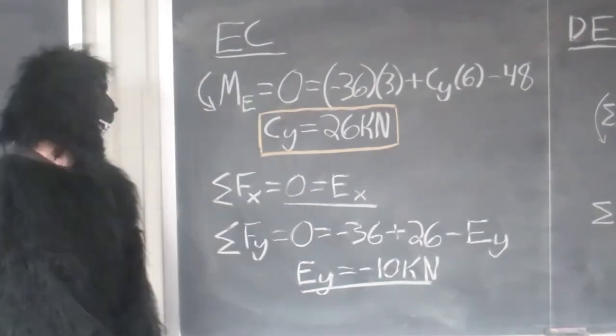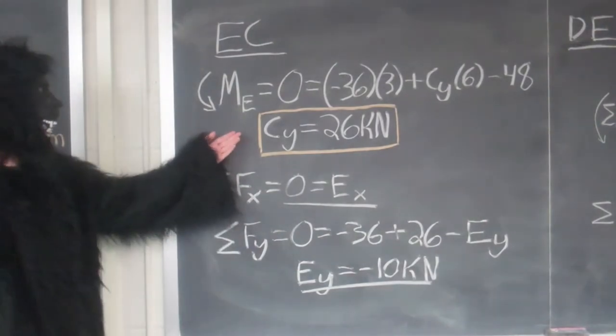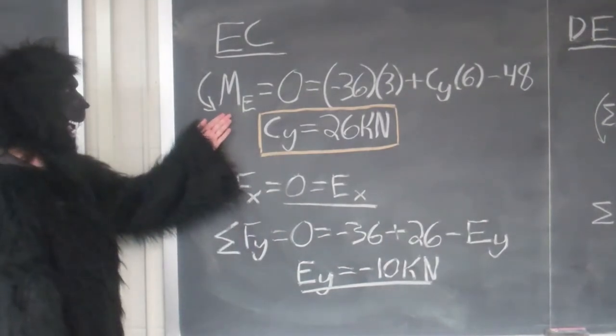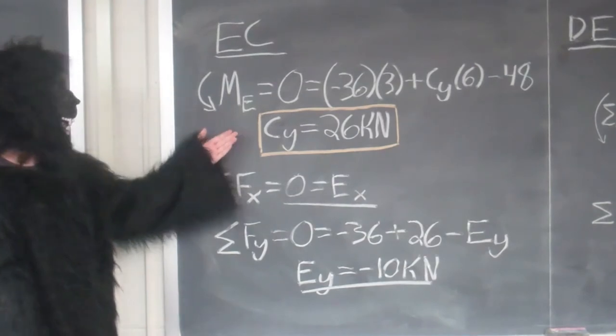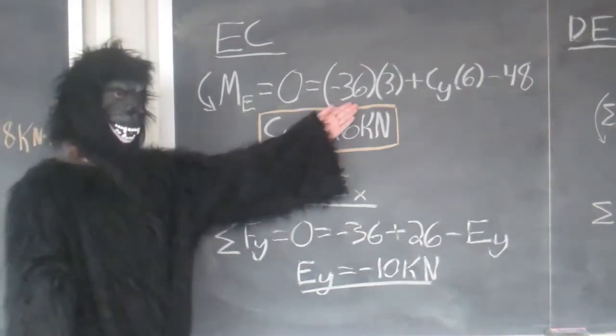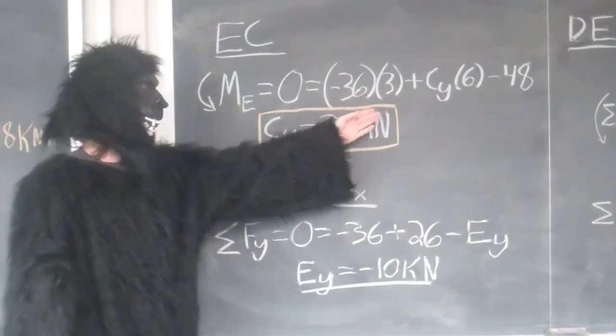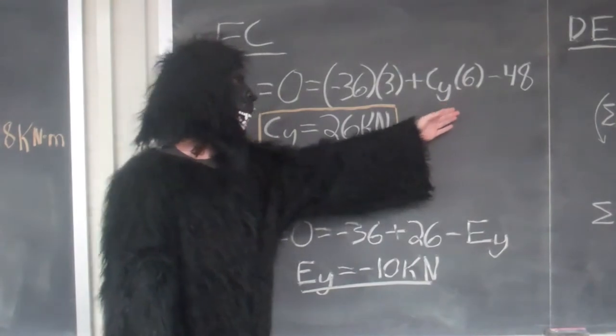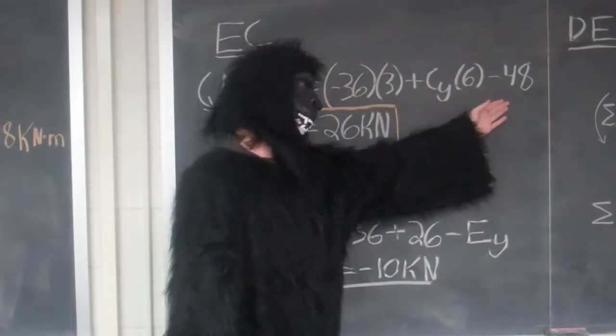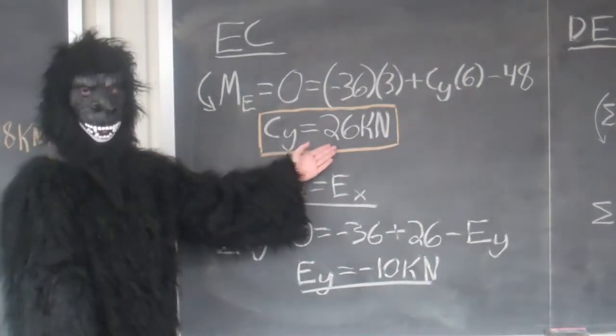As we try to solve for our force CY, we decided to take the moments at point E in order to cancel out the forces EX and EY. We have the force of our distributed load times the distance of 3 meters plus our force CY times the distance of 6 meters minus the initial moment of 48, giving us 26 kN.